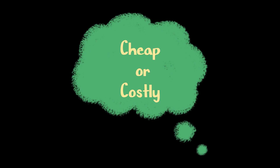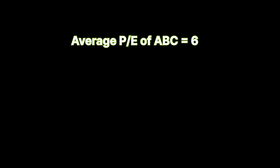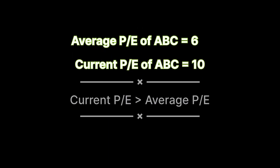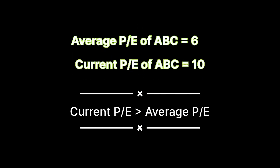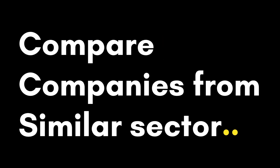Similarly, to know whether we are getting ABC company at the right price or not, we can compare the average PE of the ABC company to its current PE. Let's say the average PE of ABC company is 6 and currently the share is trading at a PE of 10. That means the current PE is more than the average PE, which means ABC company is currently trading at a higher price — it is costly right now.